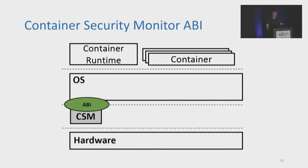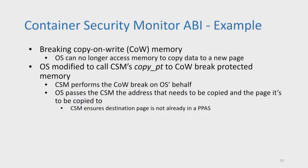Due to the added protection of the CSM, the OS doesn't have access to perform some of its normal operations. To enable these operations, as well as to support secured containers, the CSM provides the OS with an ABI. For example, the OS routinely has to break copy-on-write pages and copy the page's data to a new page. However, with BlackBox, the OS can't access container memory and so it can't perform this operation. To resolve this, the OS is modified so that when it needs to break a protected page, it makes a copy-page call to the CSM instead of trying to perform the COW break itself.